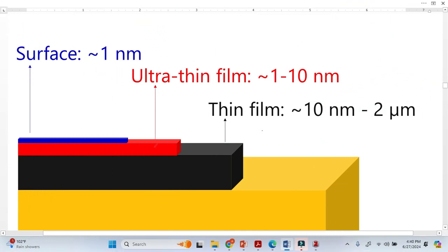Finally, for understanding, let's clarify the surface, ultra-thin film and thin film from this diagram. We can see that the topmost is a very thin film, basically surface. This means the thickness of this layer is approximately one nanometer. If we look into ultra-thin film, this is basically the ultra-thin film, approximately up to 10 nanometers.